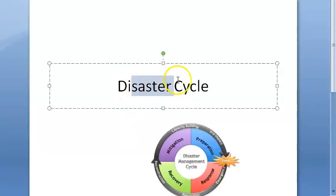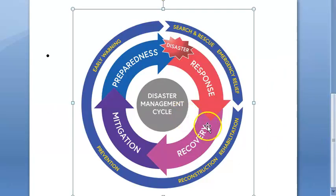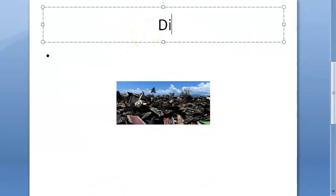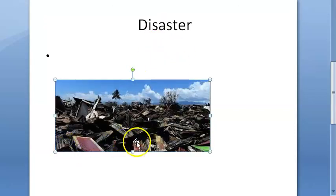In this video, let us look at the disaster cycle. A disaster is any occurrence that causes damage, ecological disruption, loss of human life, or deterioration of health and health services on a scale sufficient to warrant an extraordinary response from outside of the affected community or area.